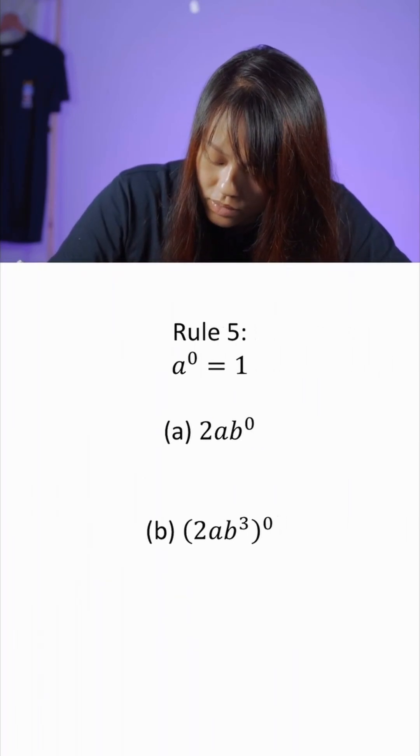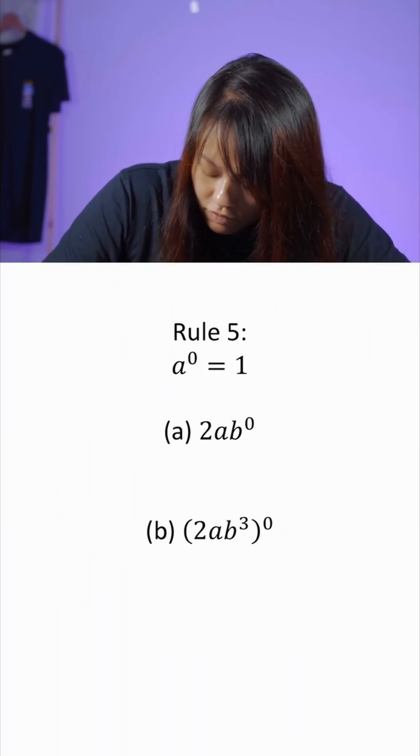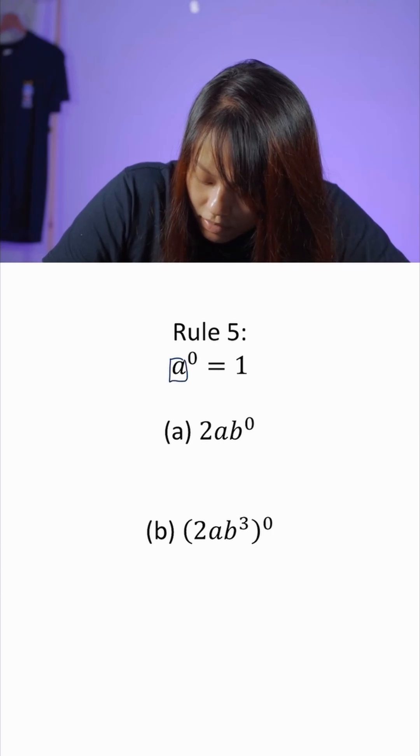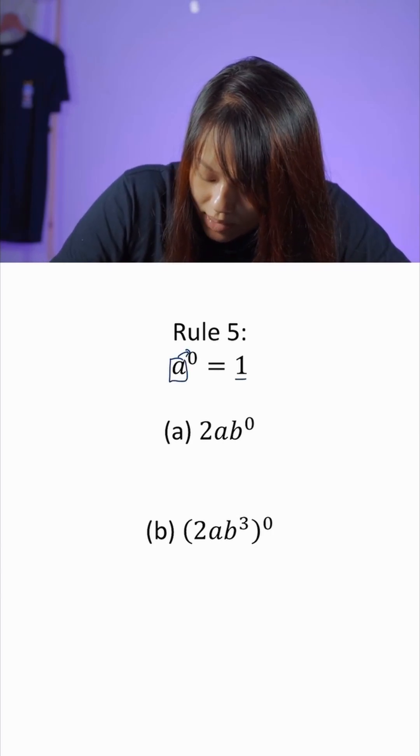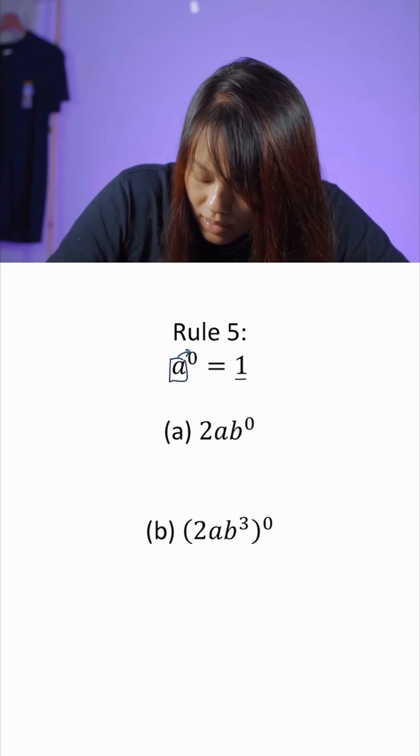Now let's look at rule number 5. This rule states that any base to the power of 0 will always equal 1. But take note that it only applies to the base that has power 0.